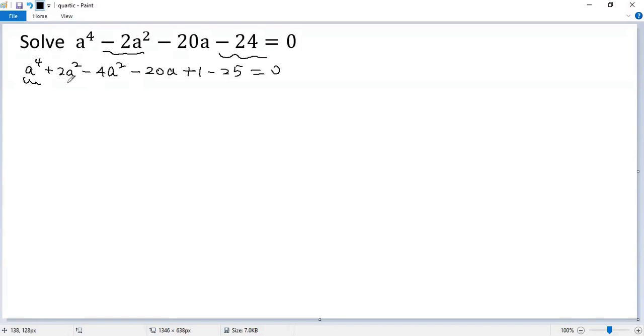Let's take these three terms, which is a perfect square. So a to power 4 plus 2a squared plus 1. The last terms, minus 4a squared plus 20a plus 25 equals 0. So we get a squared plus 1 squared minus 2a plus 5 squared equals 0.